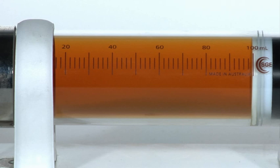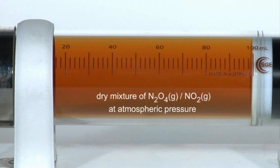The cold trap was evacuated with a vacuum pump leaving solid colorless dinitrogen tetroxide. The compound was then allowed to evaporate at atmospheric pressure into the glass syringe which was sealed with a tap.